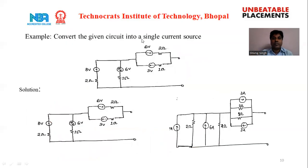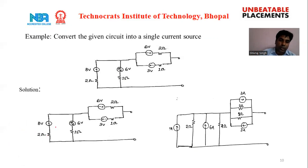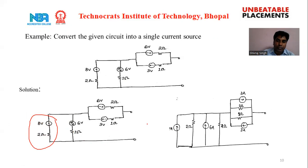The third example asks us to convert the given circuit into a single current source. We see 8 volt in series with 2 ohm, and 6 volt with negative polarity in series with 1 ohm. First, we convert the voltage source and series resistance combinations into current sources. The 8 volt and 2 ohm combination converts to a current source of 8 divided by 2 equals 4 ampere, with 2 ohm in parallel.